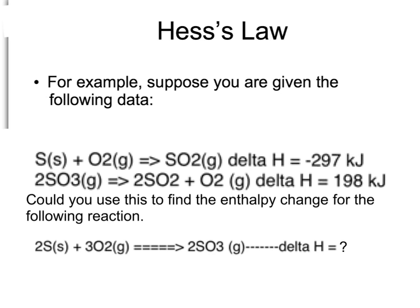So the question is, can we use these two steps to find the total enthalpy change for the following reaction: 2 sulfur solid plus 3 oxygen gas gives us 2 sulfur trioxide gas. And if we can do this, then how do we find the delta H?